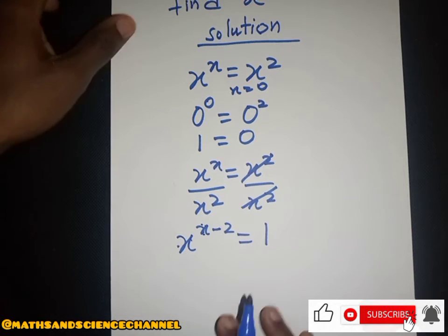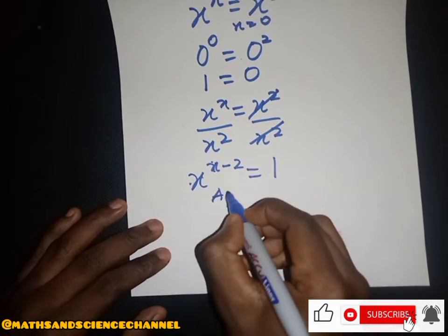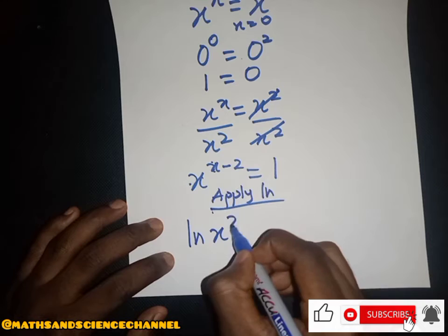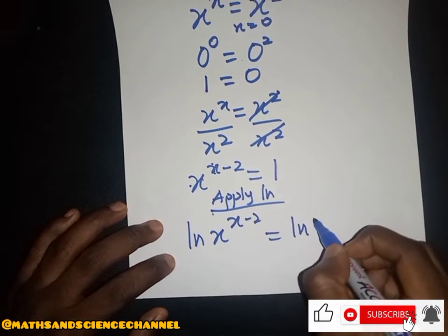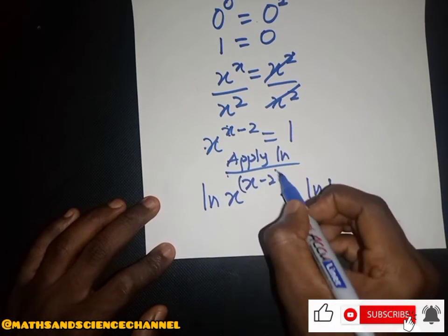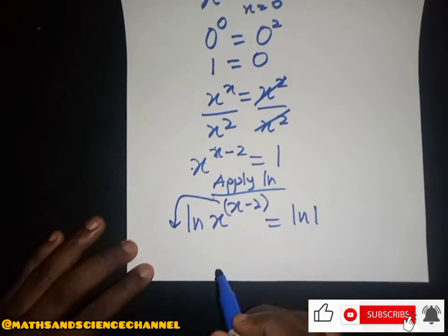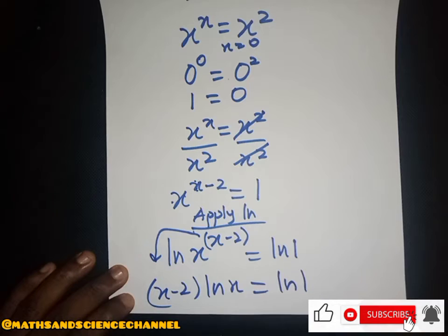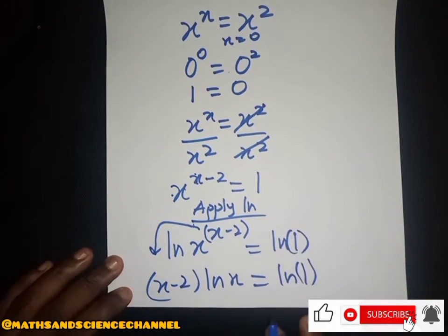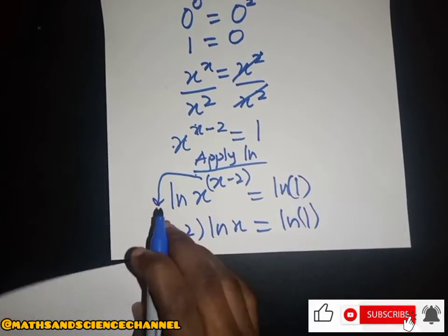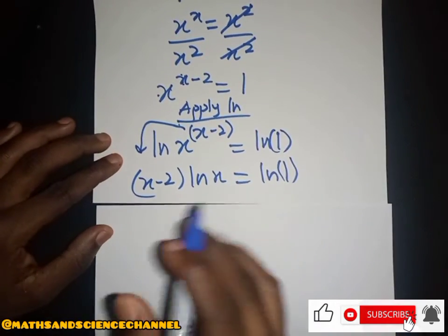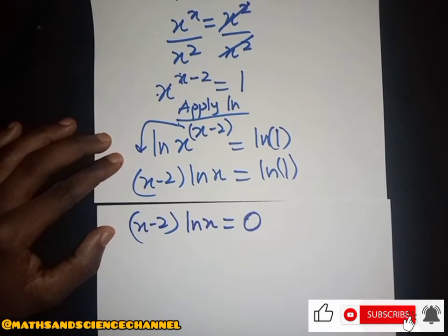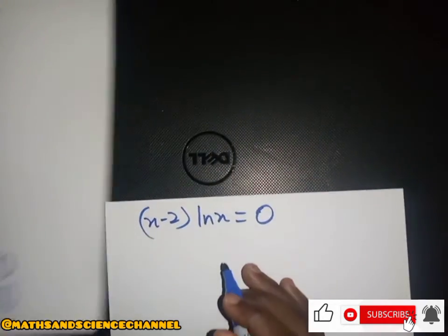What we can do is apply the natural log (ln) to both sides. So we apply ln to x to the power x minus two, and ln of one. Since x minus two is in the exponent, it moves in front, giving us: x minus two times ln(x) equals ln(1).